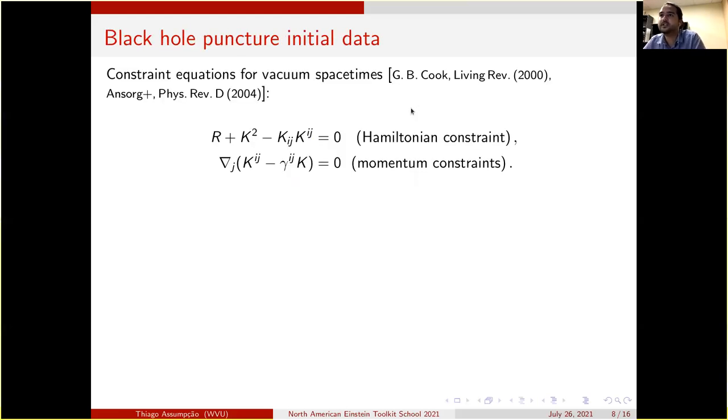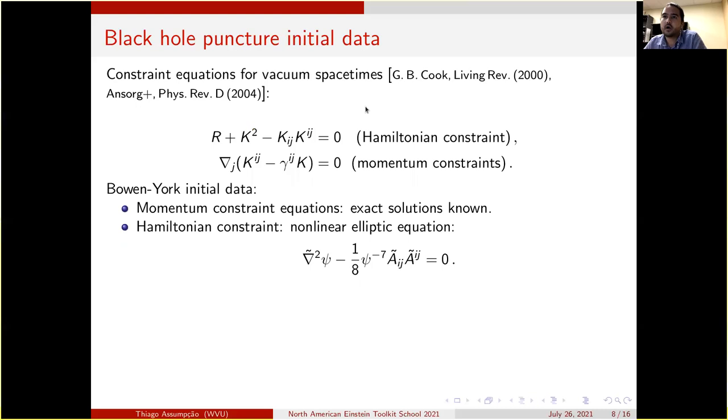We want to use this method to generate black hole puncture initial data. In vacuum spacetimes, if you want to generate initial data, you have to solve these equations: the Hamiltonian constraint and the momentum constraints. For Bowen-York initial data, the momentum constraint equations have an exact solution.